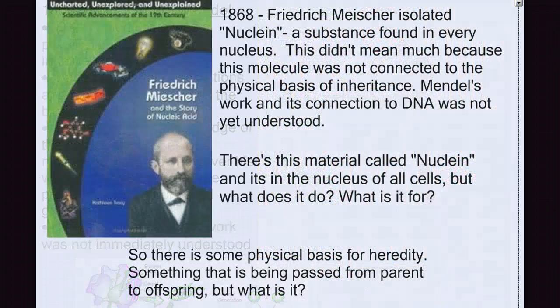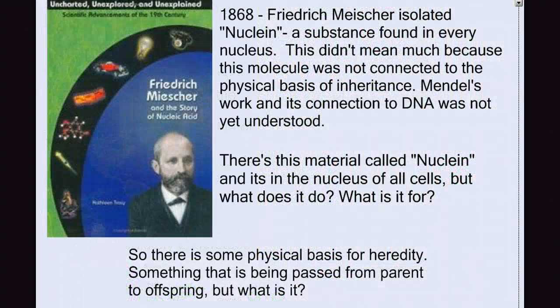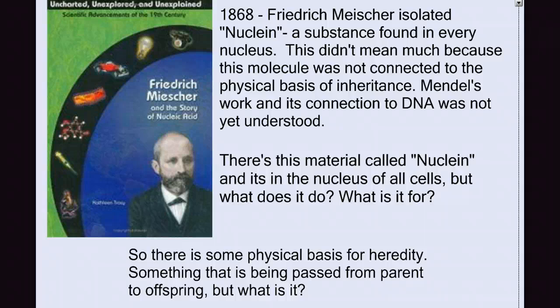Shortly thereafter, in fact three years later, Frederick Meischer isolated nuclein, a substance found in every nucleus. Later, the name was changed to DNA. This didn't mean much at the time, because this molecule was not connected to the physical basis of inheritance. Mendel's work, and its connection to DNA, was not yet understood. So all we know now is there's this material in the nucleus. But what does it do, and what is it for?